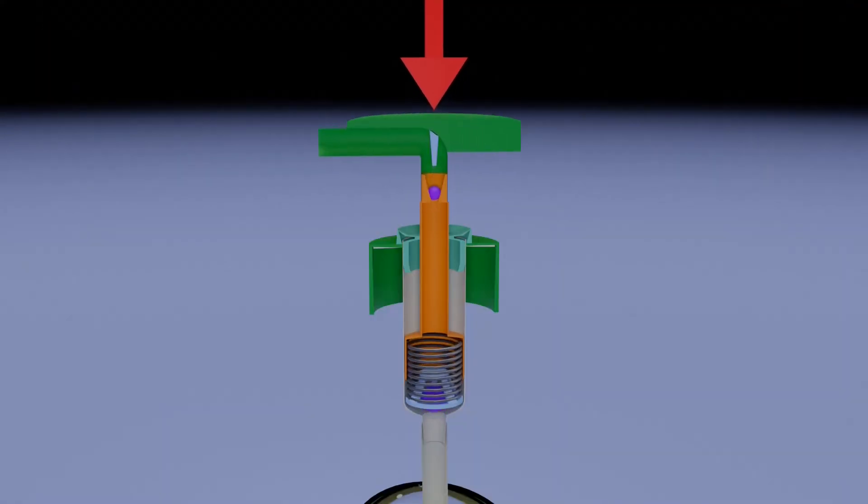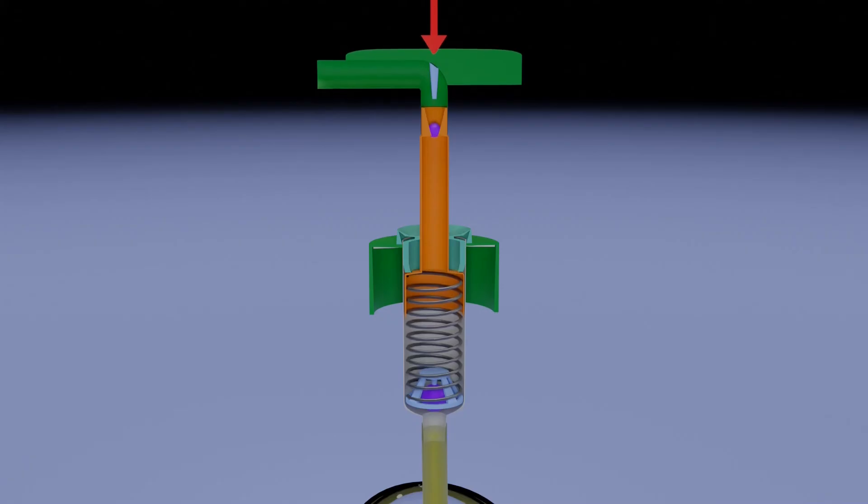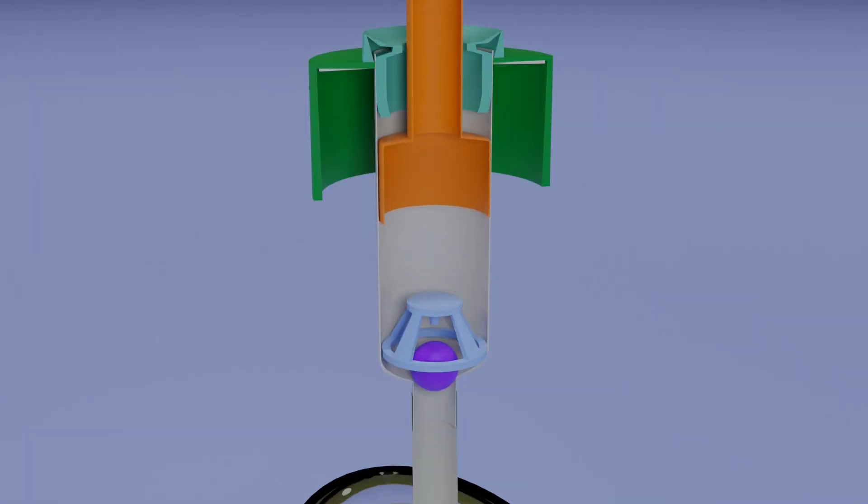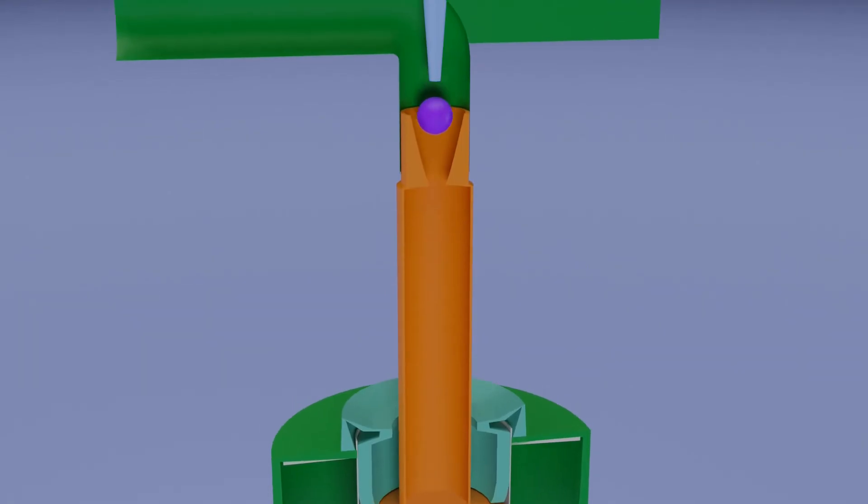When the force is released, the piston moves up due to the compressed spring. This causes a low pressure in the chamber and it sucks the lower ball up and sucks the liquid from the container into the chamber. At the same time, the upper ball is sucked downwards and makes the chamber airtight so that the low pressure created in the chamber can suck only the liquid but not the outside air.